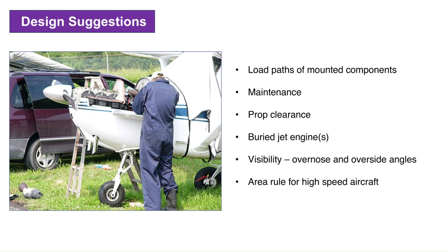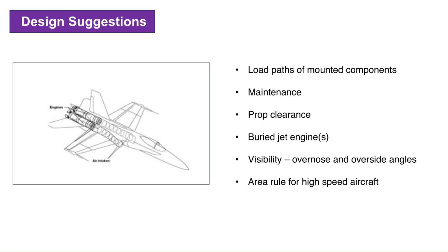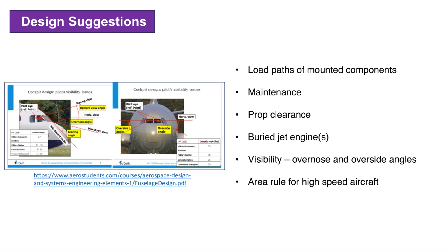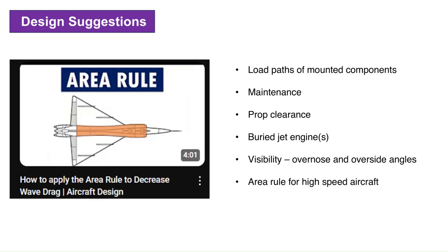For propeller aircraft, there should be adequate prop clearance at the nose. Jet engines buried in the fuselage will impact the fuselage geometry, as well as the inlet and exhaust paths. Pilot visibility is also crucial — consider the requirements of the overnose and overside angles. In case of transonic and supersonic aircraft, consider applying the area rule to the fuselage, as discussed in a previous video.